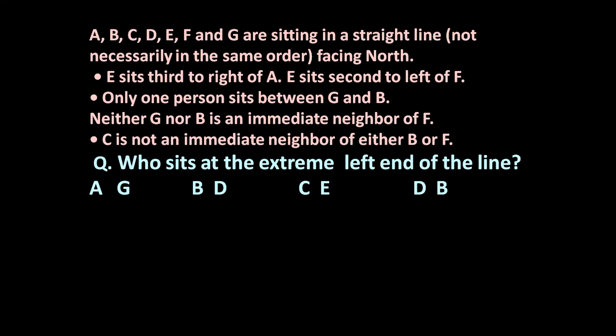The given problem is: A, B, C, D, E, F and G are sitting in a straight line, not necessarily in the same order, facing north.